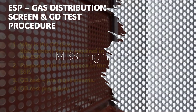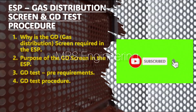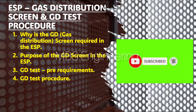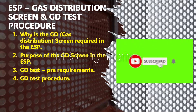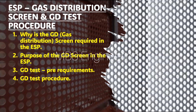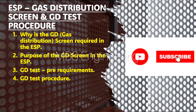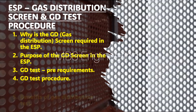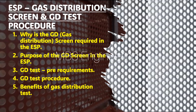Welcome to the MBS Engineering channel. An electrostatic precipitator (ESP) is defined as a filtration device used to remove fine particles like smoke and fine dust from flowing gas. It is the most commonly used device for air pollution control. Today we are going to discuss the gas distribution screen and how it helps in the ESP equipment, and how to do the gas distribution test in the electrostatic precipitator.